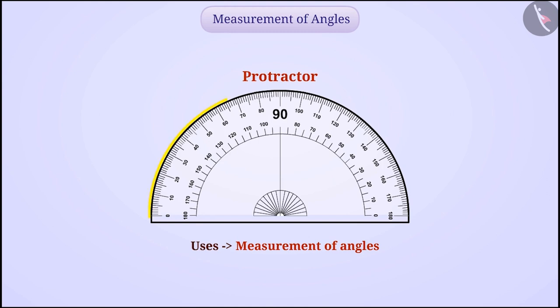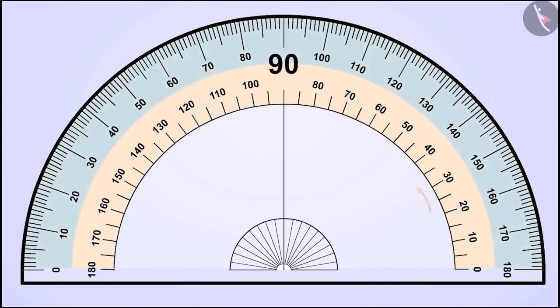Its edge is divided into 180 equal parts, where each part is called a degree. To measure, 0 to 180 marks are marked on it from both the left and the right sides.